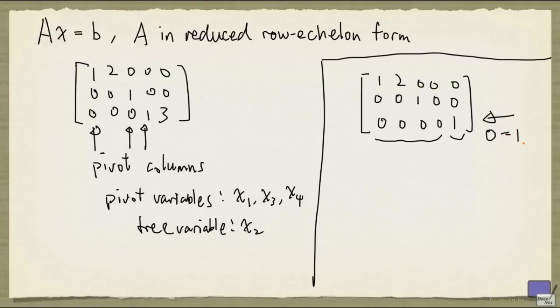Obviously, 0 cannot be equal to 1. No matter what values you set the variables to, this will never be satisfied. So this augmented matrix tells us that there's going to be no solution.